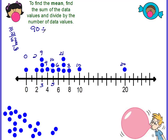And now we need to divide — divide by how many dots there are. Counting: one, two, three, four, five, six, seven, eight, nine, ten, eleven, twelve, thirteen, fourteen, fifteen. And ninety divided by fifteen is six. So the mean is going to be six.